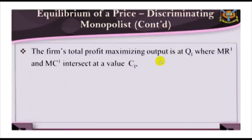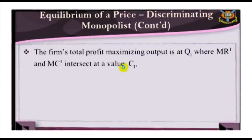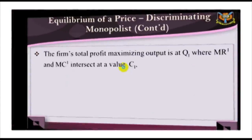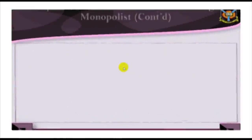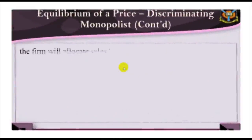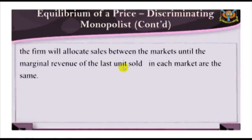The firm's total profit-maximizing output is at Q1, where MR1 and MC1 intersect at value C1. The firm will allocate sales between the markets until the marginal revenue of the last unit sold is the same in each market.